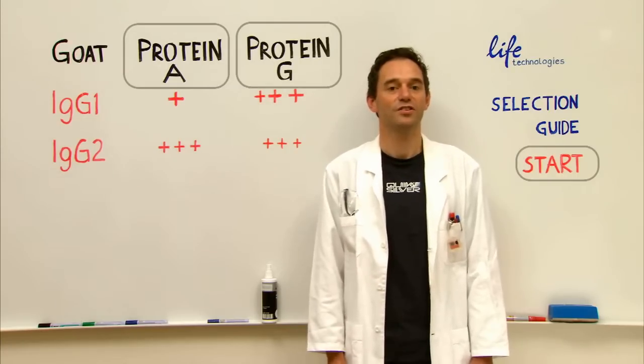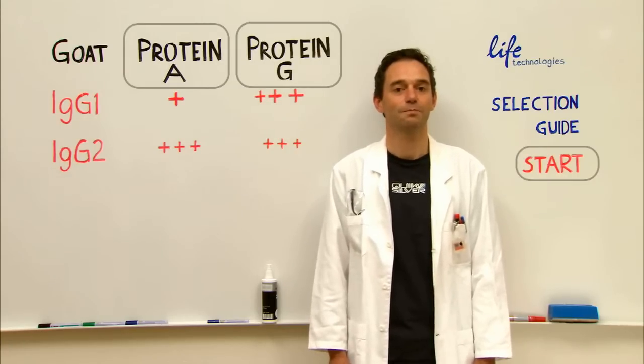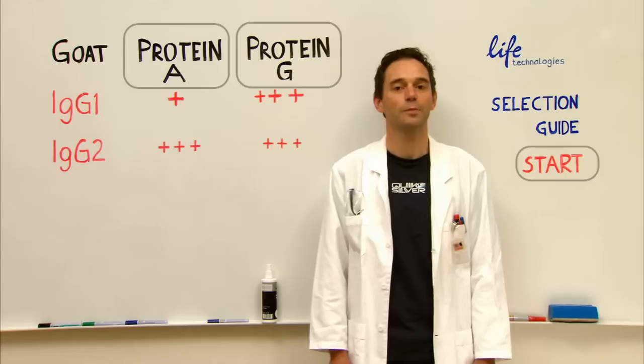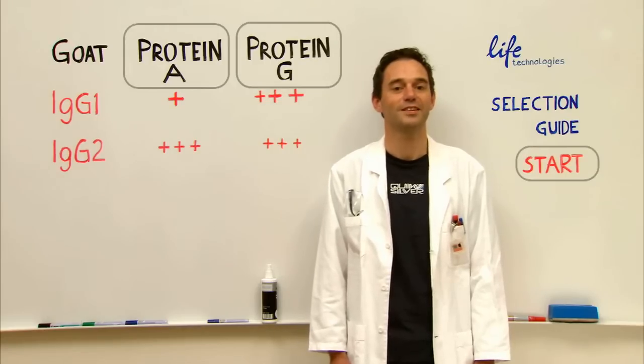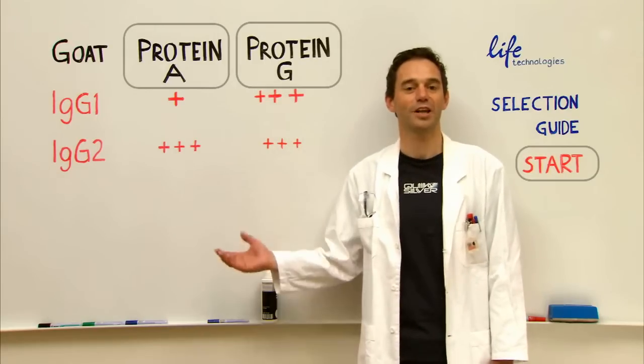So when affinity is the same, we recommend protein G. Actually, we'd recommend protein G for both subclasses listed here. Go ahead and make your selection.